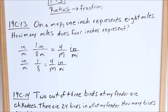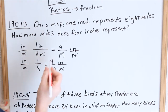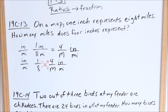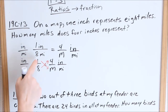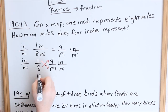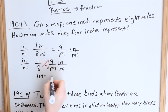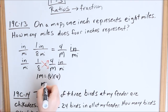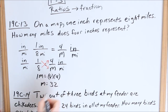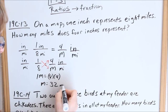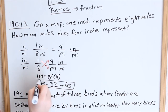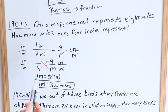We solved it using cross multiplication. One times M equals eight times four. One M, or just M, equals 32 — and that represents miles. Remember, in a word problem it's really important to include units. So four inches would represent 32 miles on the map.